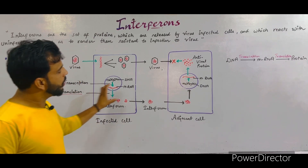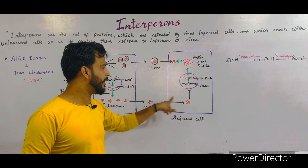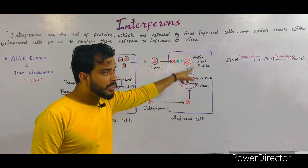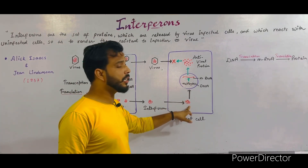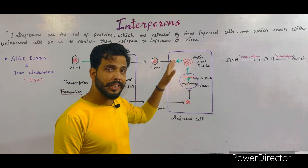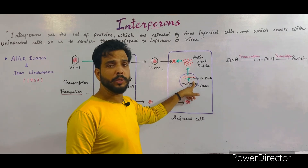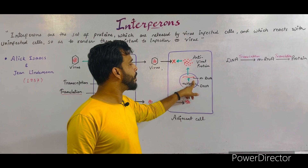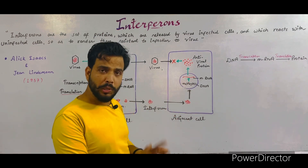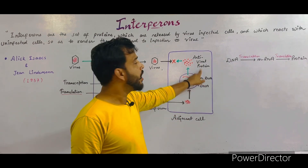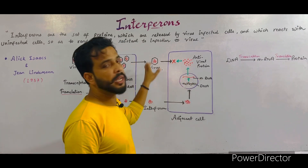Now these interferons move towards the adjacent cells. The interferon enters the adjacent uninfected cell and alerts it about the virus infection. When this interferon provides the signal to the adjacent uninfected cell, the DNA of that cell also produces mRNA through transcription, and this mRNA produces an antiviral protein through translation. After protein synthesis, an antiviral protein is formed, and when viruses attack this cell, the antiviral protein protects the cell from viral infection.